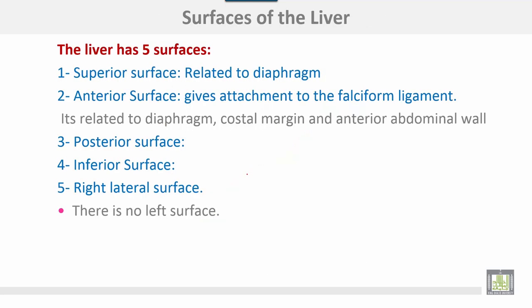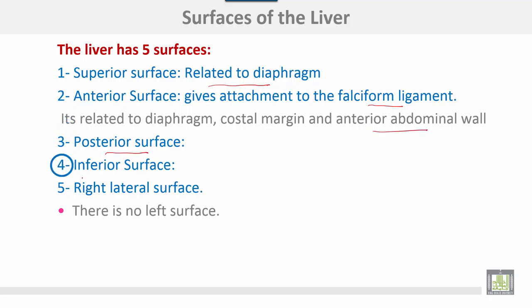The surface of the liver has five surfaces: the superior surface, related to the diaphragm; the anterior surface, which gives attachment to the falciform ligament and is related to the diaphragm, costal margin, and anterior abdominal wall; then the posterior surface, inferior surface, and right lateral surface. There is no left surface for the liver.